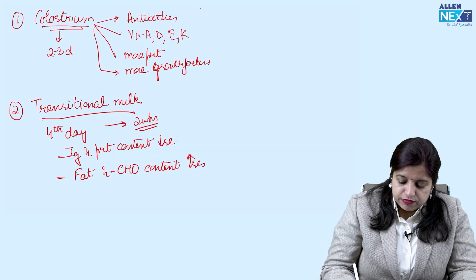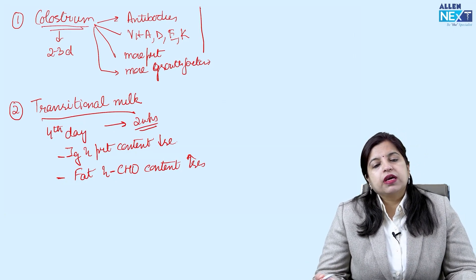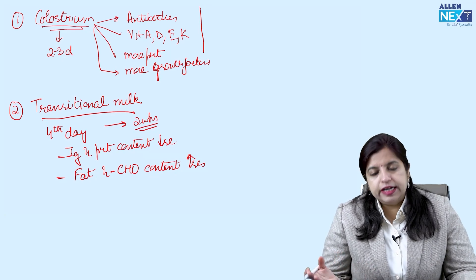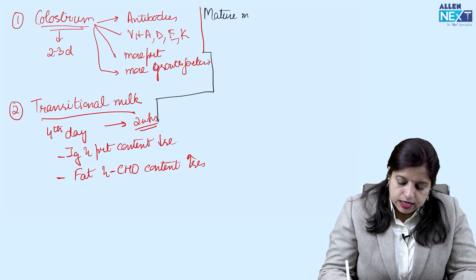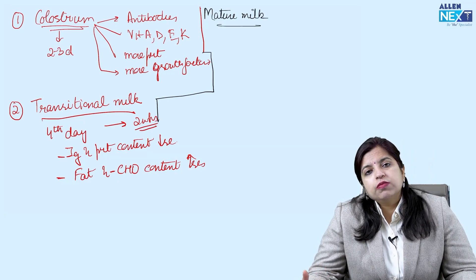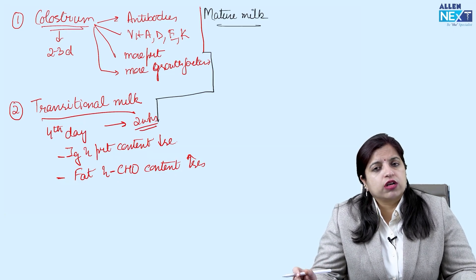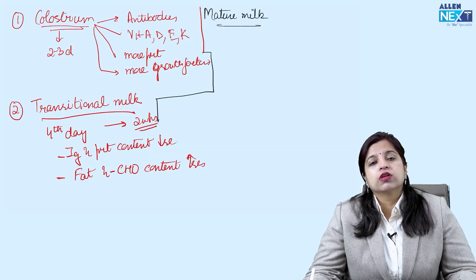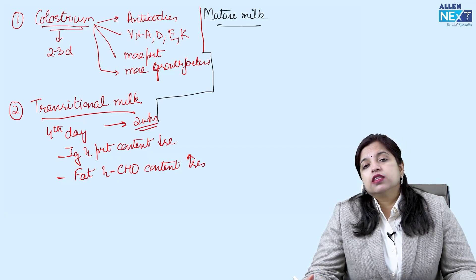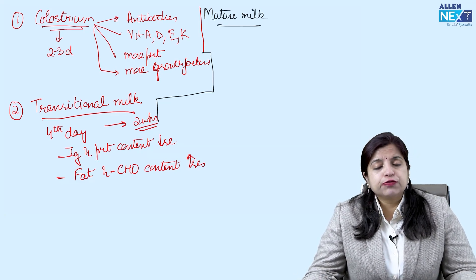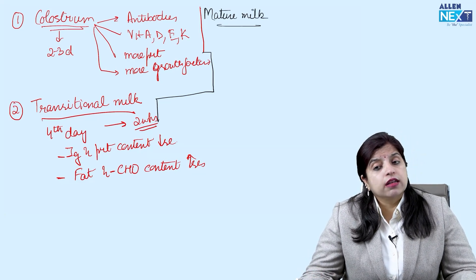Then let us come to another kind of milk, and that is mature milk. This is the milk which is then secreted in the coming weeks of life for the entire period of breastfeeding. Mature milk you should know is of two types: foremilk and hindmilk. When the baby is feeding on mature milk, the initial part of feed that enters inside his mouth is nothing but foremilk, and later on after five, seven minutes, the milk that comes is the hindmilk.